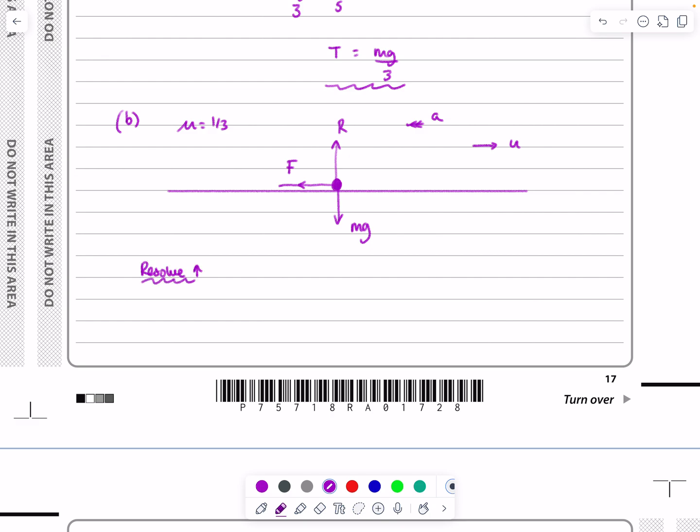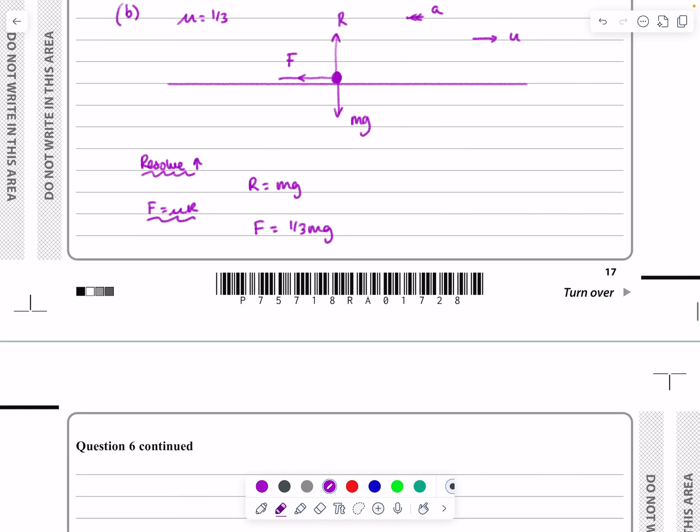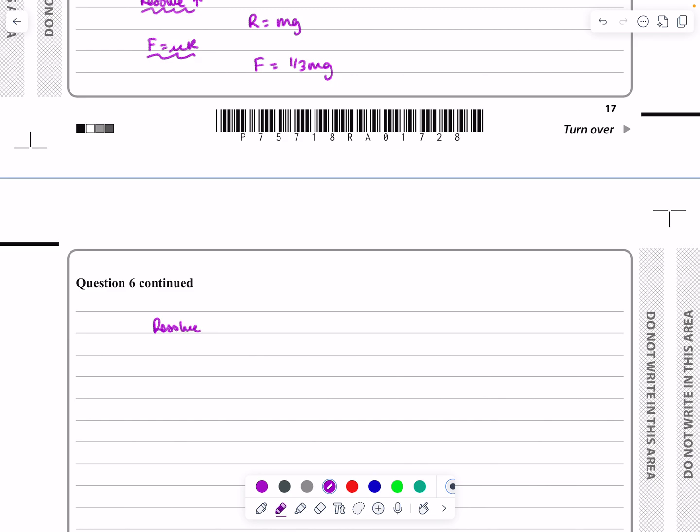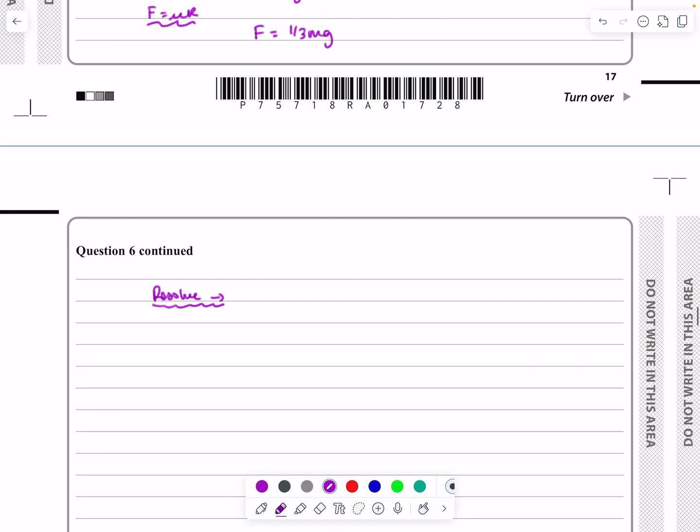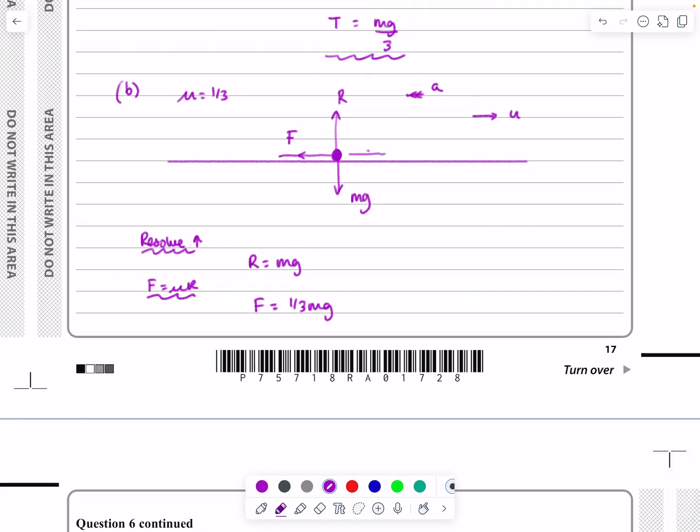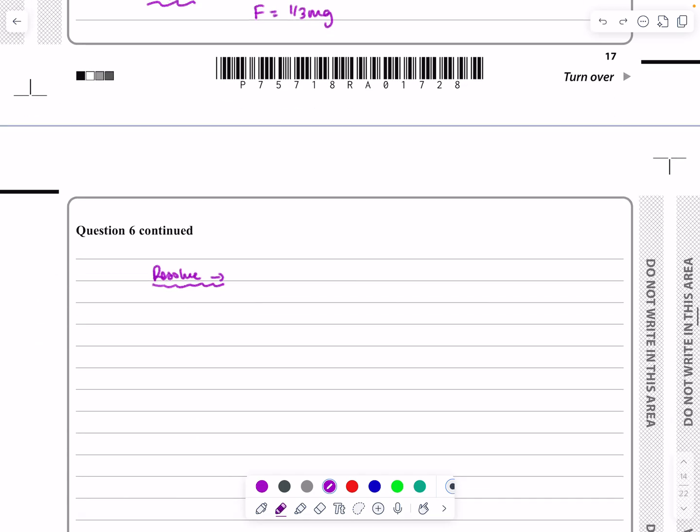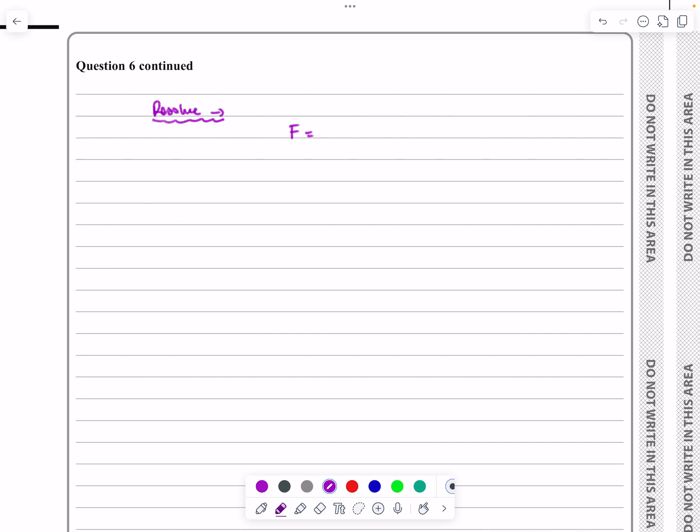We can use all the same information. If I resolve perpendicular, I'll get R equals mg. If I say F equals mu R, I'm going to get F equals one-third mg again. Then if I resolve horizontally, this is the bit I need to do now to work out the deceleration. F equals ma, it's going to be minus one-third mg equals mass times acceleration. The m's cancel, so our acceleration is a equals minus g over 3.